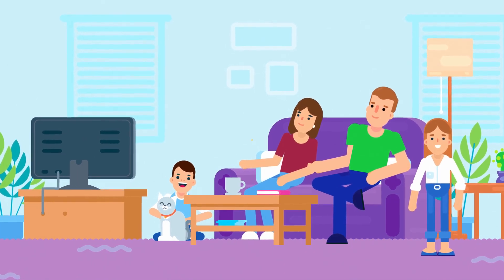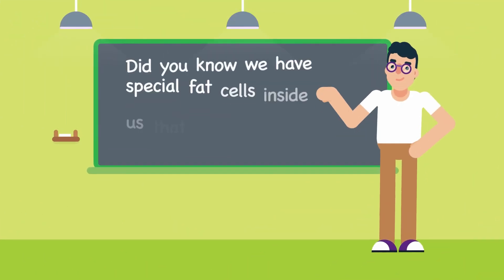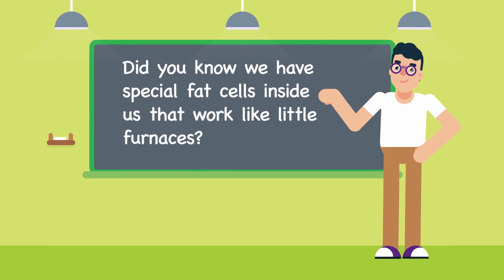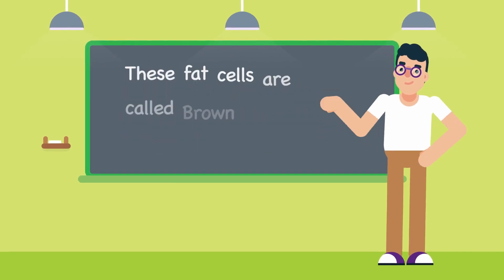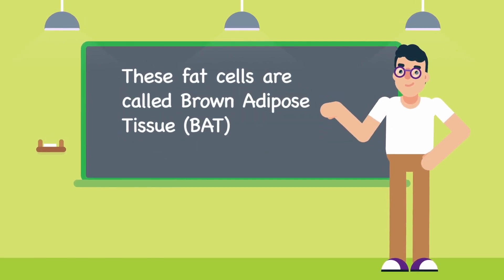Did you know we have special fat cells inside us that work like little furnaces? These fat cells are called brown adipose tissue, or BAT.